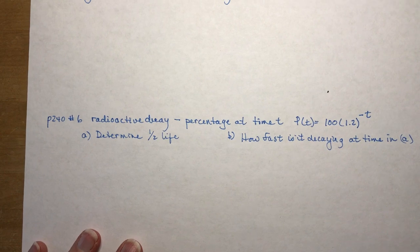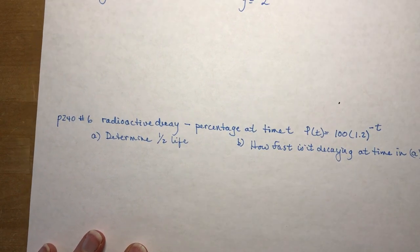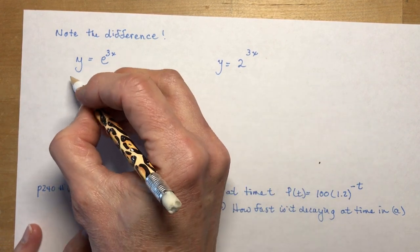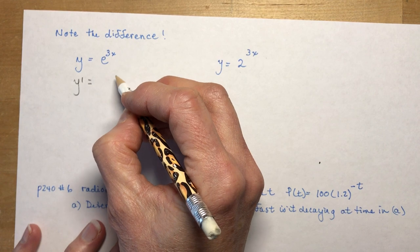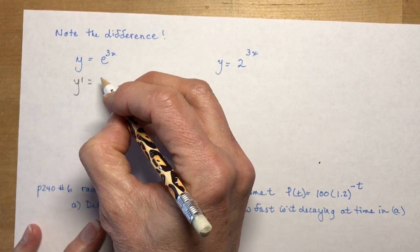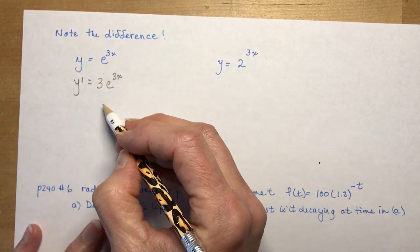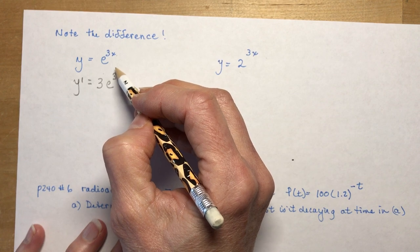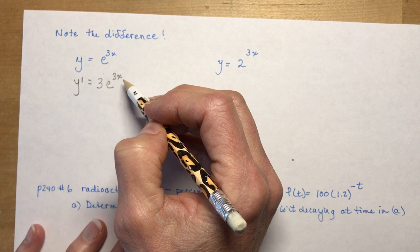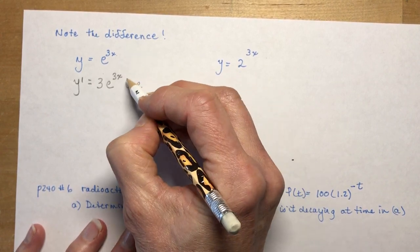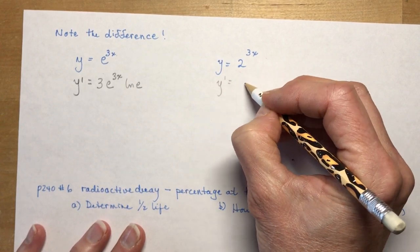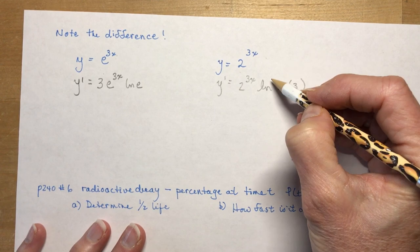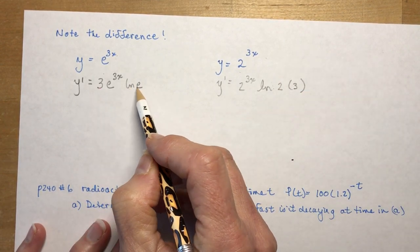So let's take a look at this, because I wanted you to note the difference between e to the x and the derivative of e to the 3x and y equals 2 to the 3x. So y prime here is going to be e to the 3x times 3. So we had 3 e to the 3x. Now, if you did the same thing as b to the x, you would have said e to the 3x ln of e, e to the 3x ln 3 times 3.